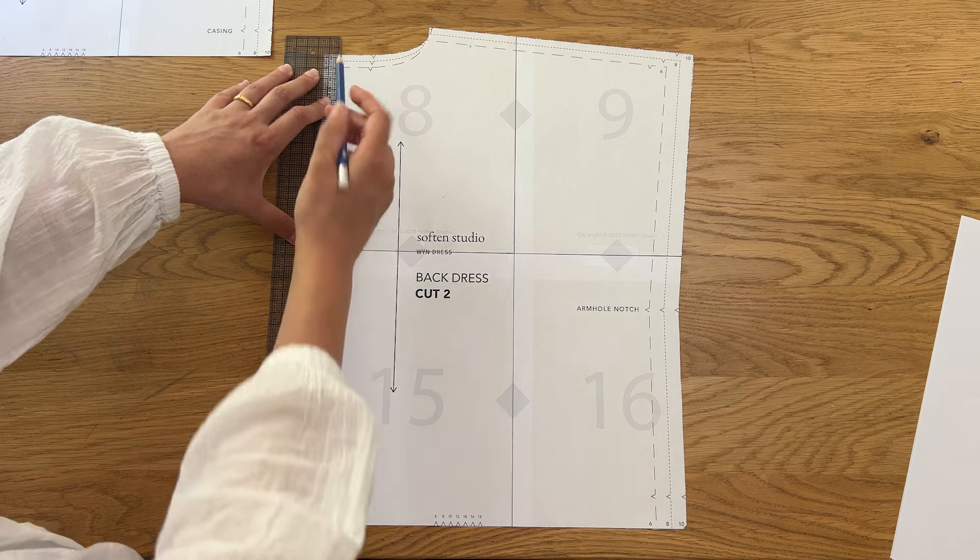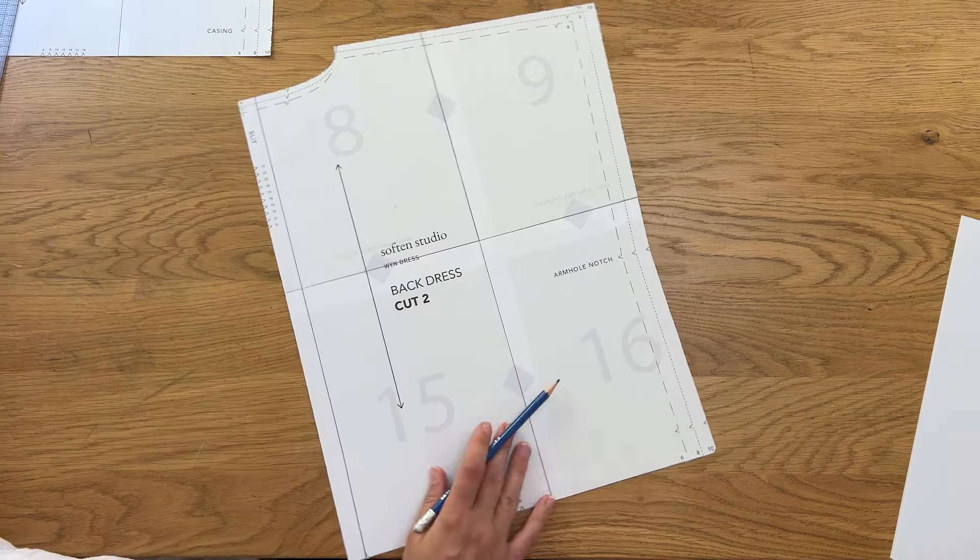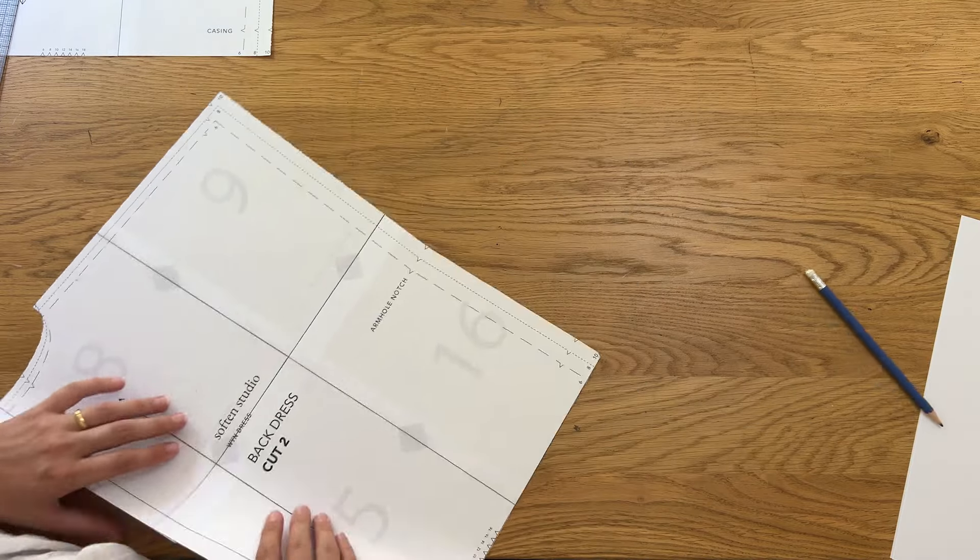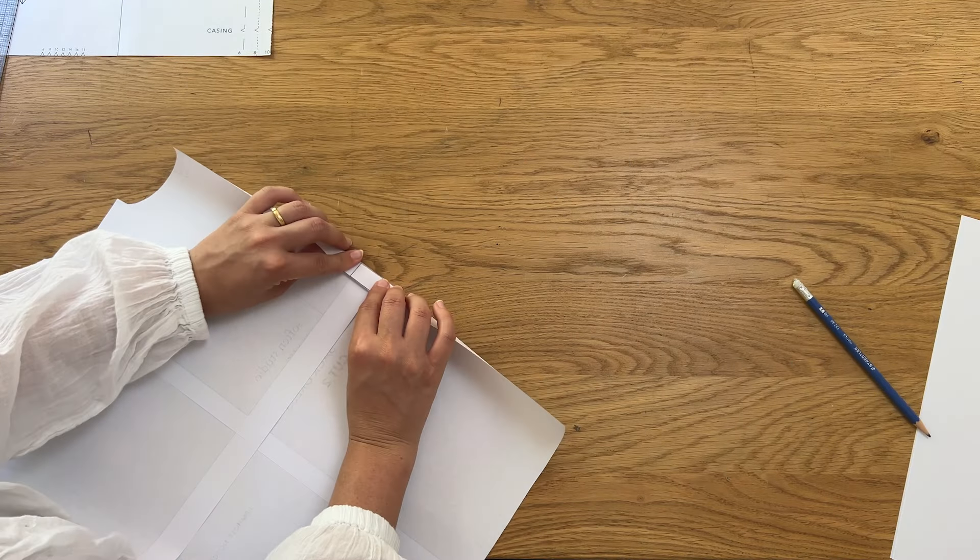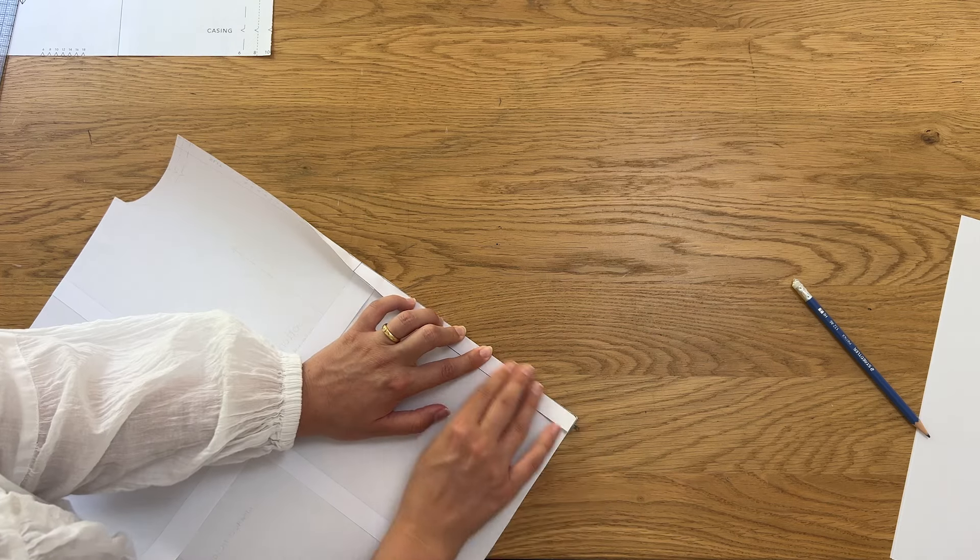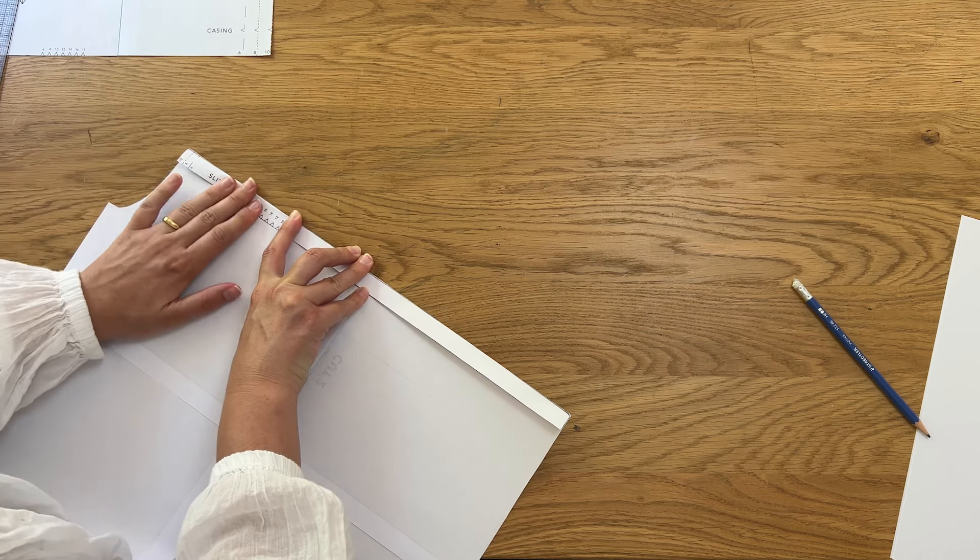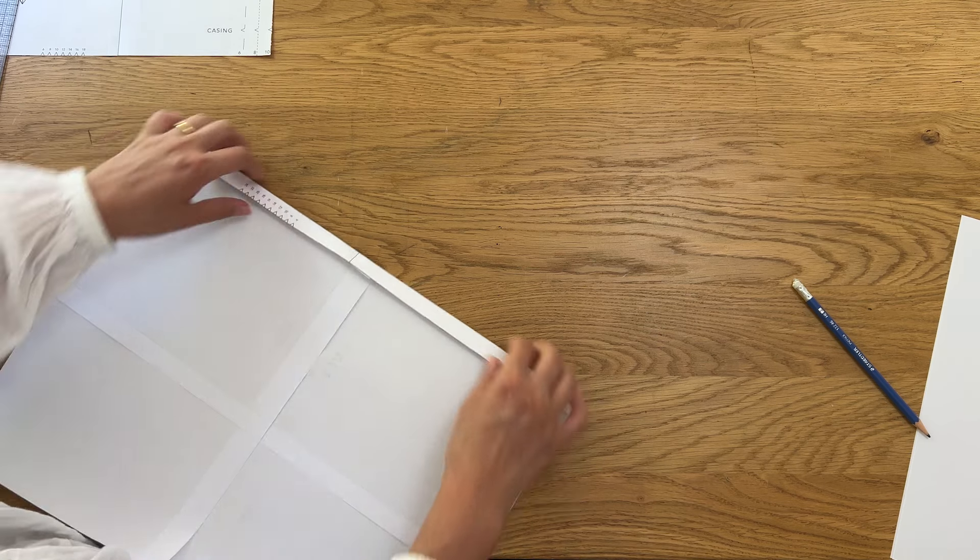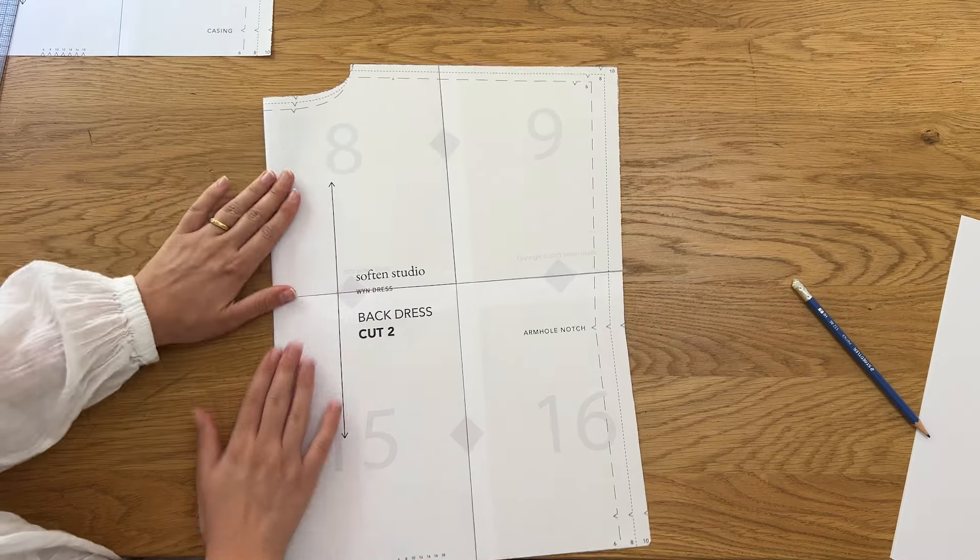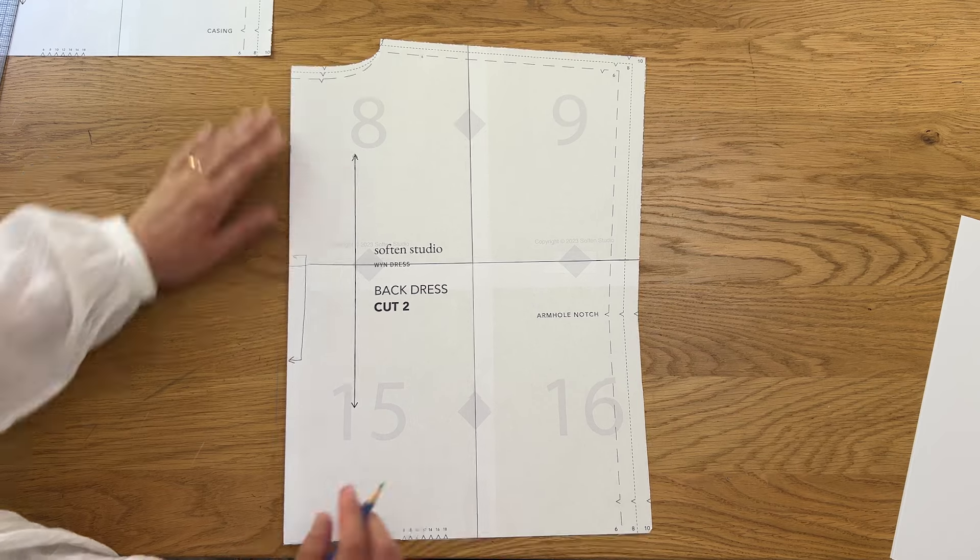Mark and measure in one and a half centimeters from the center back. Fold the pattern along this line to remove the seam allowance. If you prefer to keep the button and loop closure you can skip this step. The back pattern piece will now be cut on the fold instead of cut two.